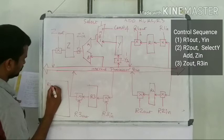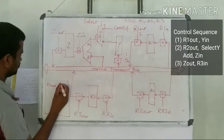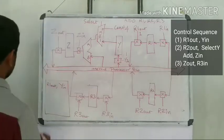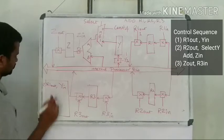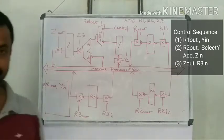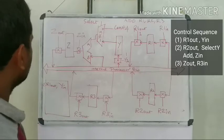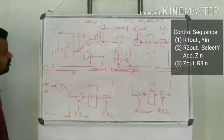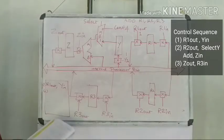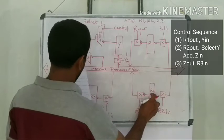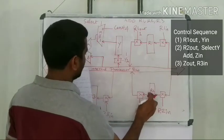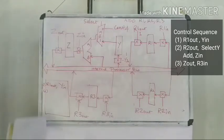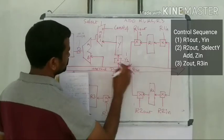We write this first step as: R1-out, Y-in — in the first clock cycle. Then, during the next clock cycle, we activate R2-out. So the content of R2 will reach the internal processor bus.